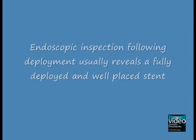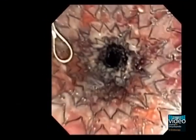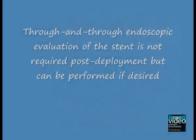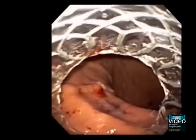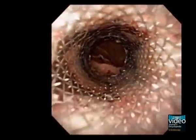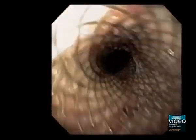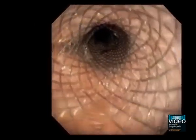Endoscopic inspection following deployment usually reveals a fully deployed and well-placed stent. Here you see a fully covered stent in good position across a tumour. Tumour is visible through the stent. Through-and-through endoscopic evaluation of the stent is not required post-deployment but can be performed if desired. Here you see a retroflex view of a distal stent. The endoscope is then straightened and removed through the stent. The distal portion of the stent is in good position in the gastric cardia, the stent is patent without signs of complication, and the proximal end of the stent is above the proximal end of the tumour.